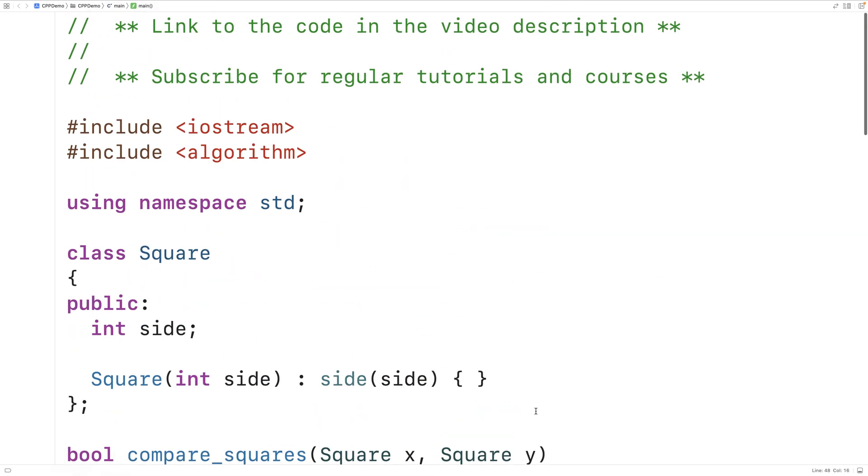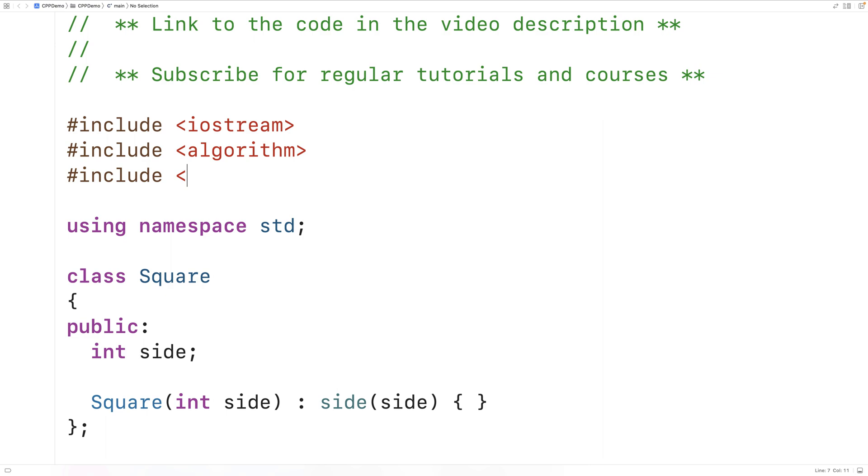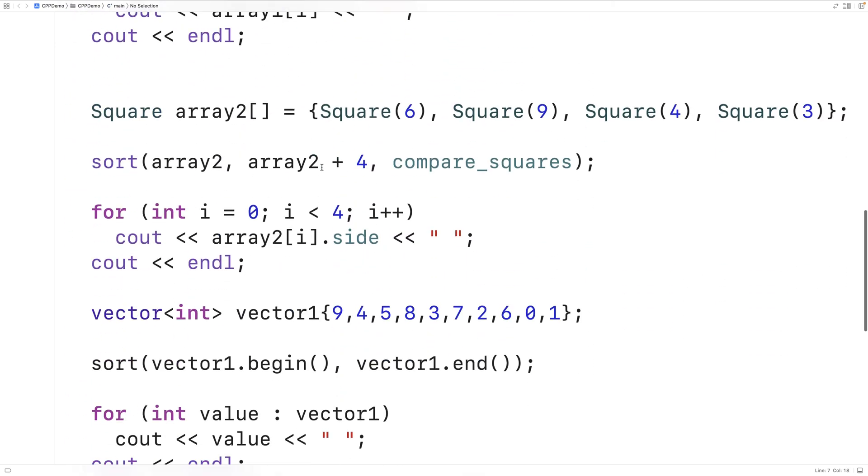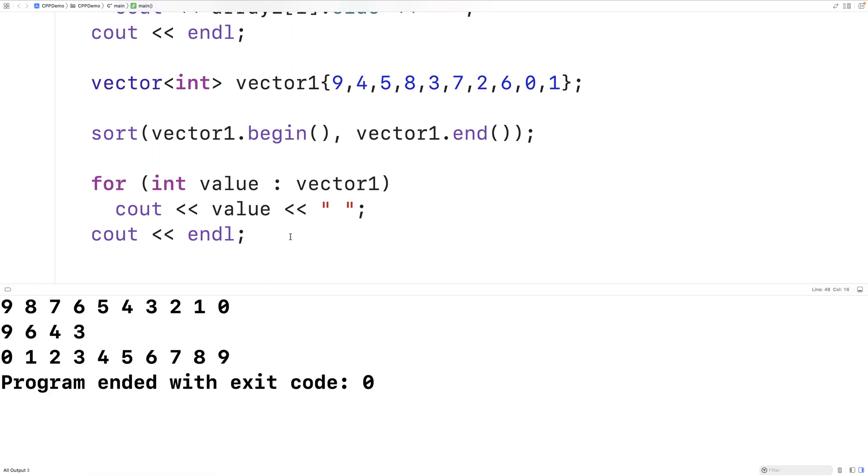Now, if we want to use vectors, we have to include the vector library. So we'll scroll up here and we'll add that. And then we'll save our program and we'll compile it and we'll run it. And now we get that our vector is sorted as well.